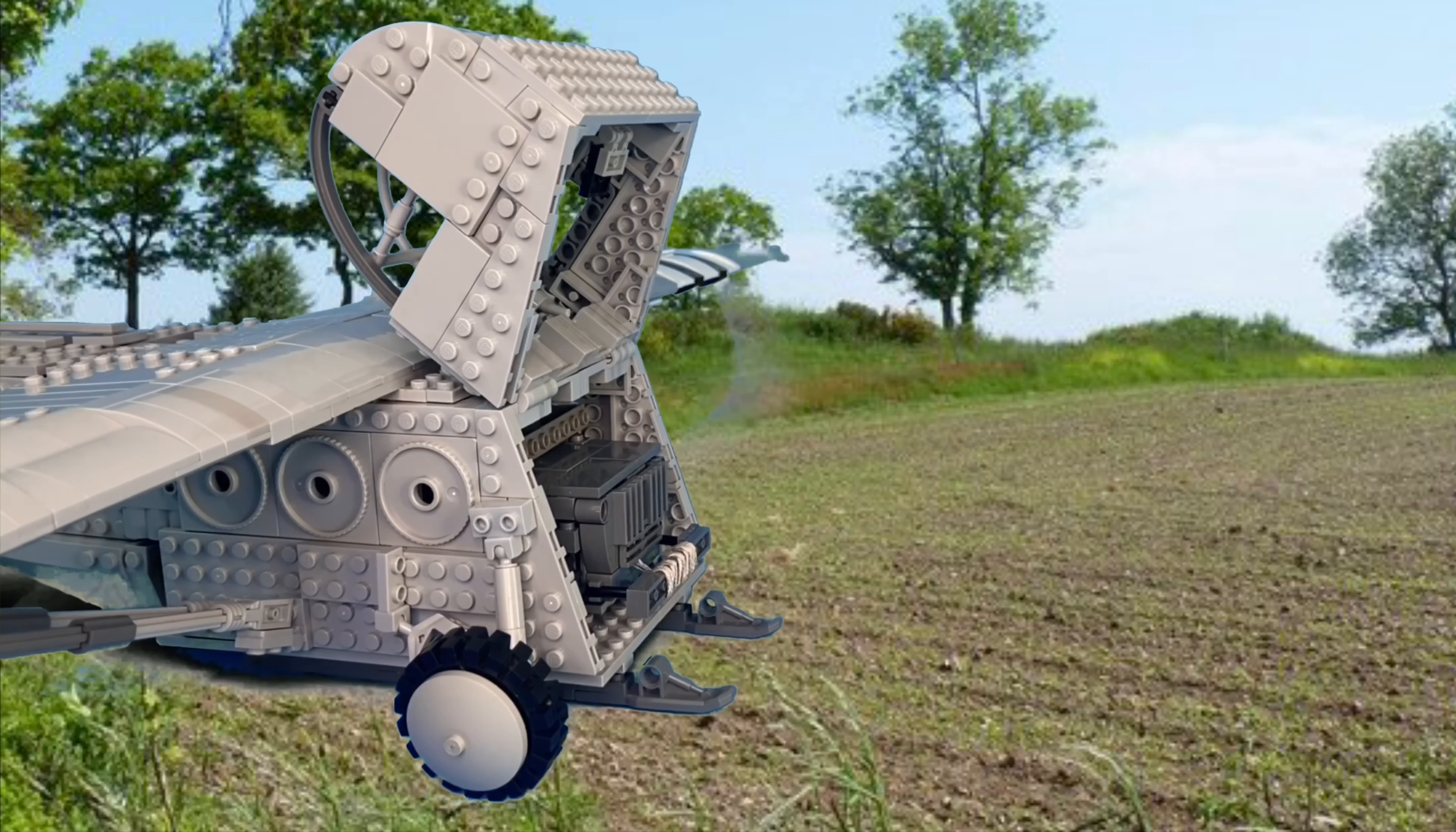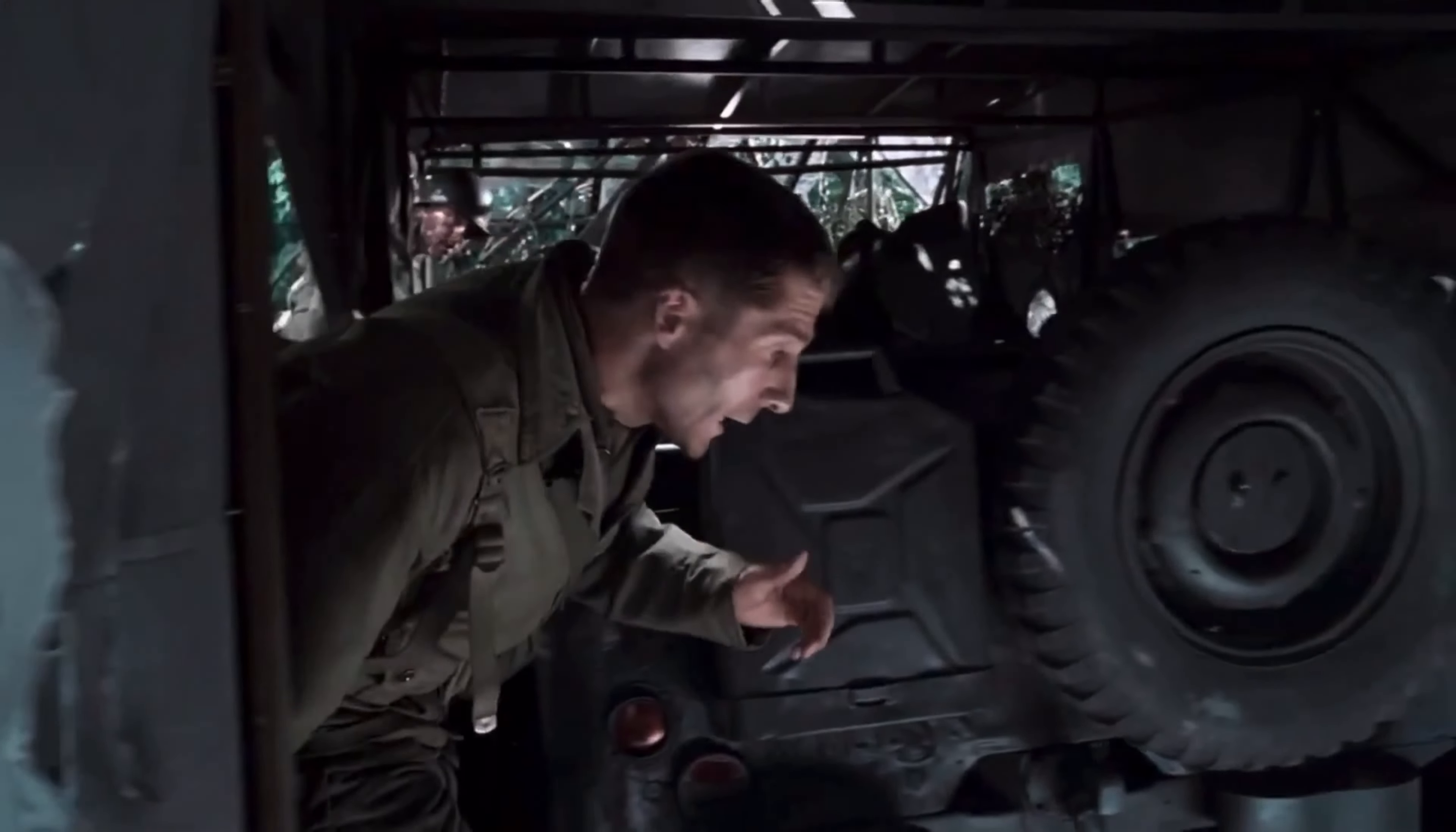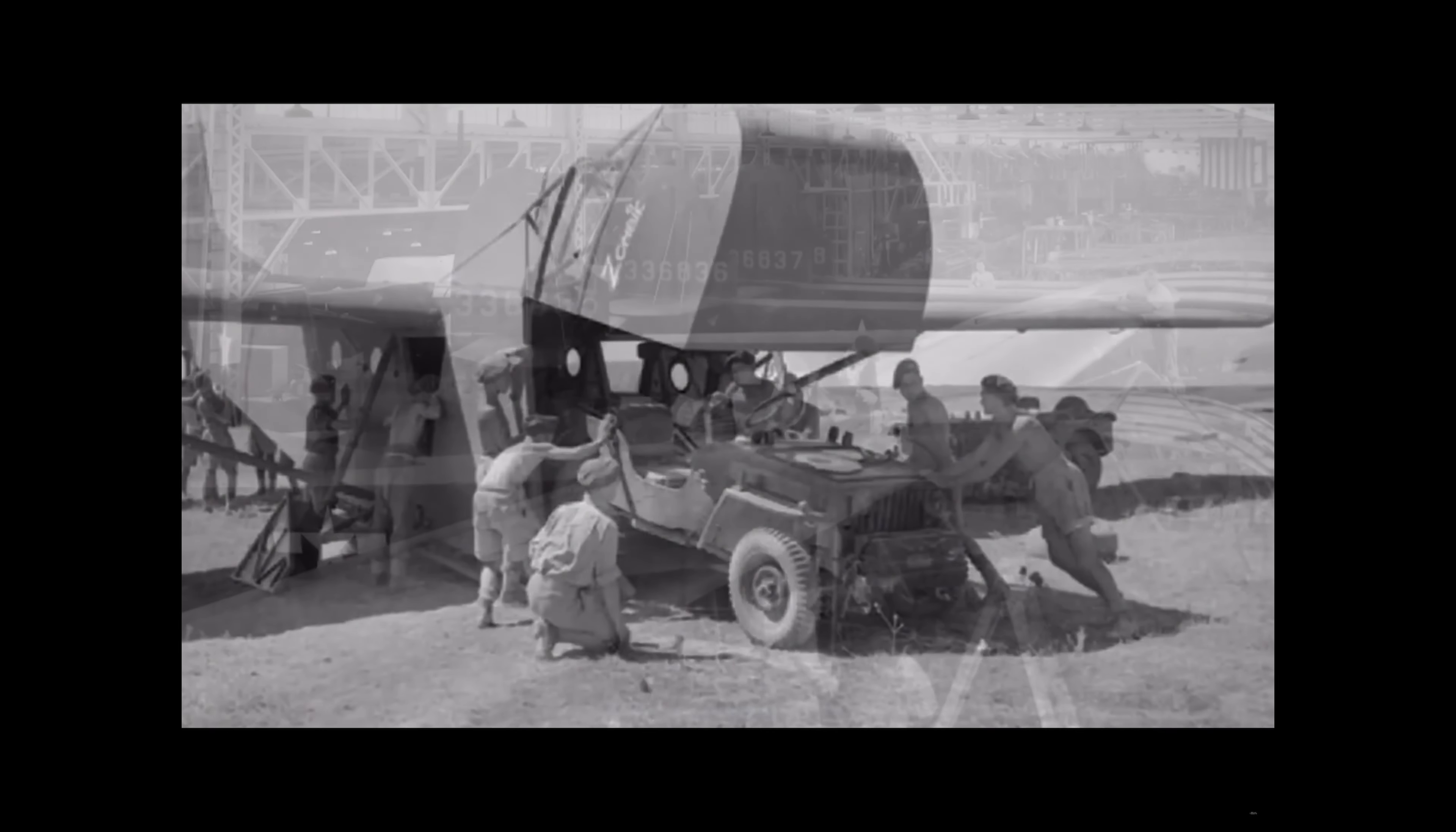Hi, it's Matt. Today we're going to take a look at the Waco CG4A glider. About 14,000 were made during World War II where it was involved in several operations, but it's perhaps most famously known for being used as part of the early phase of the D-Day invasion. The Waco CG4A could hold about 13 troopers or a pack howitzer or small vehicles such as the Jeep that's aboard this one.